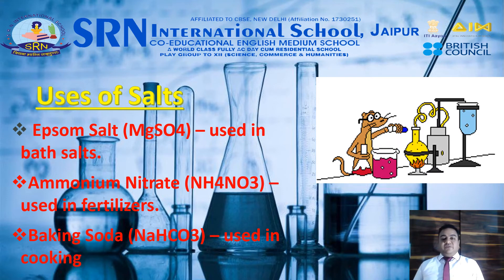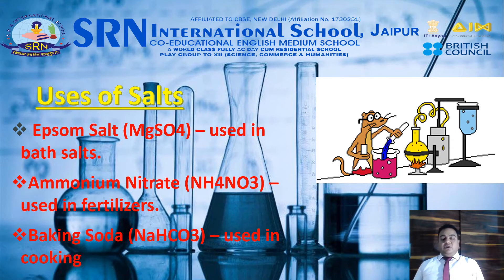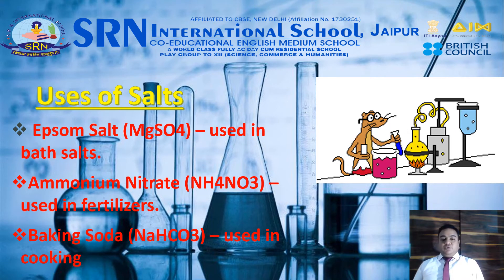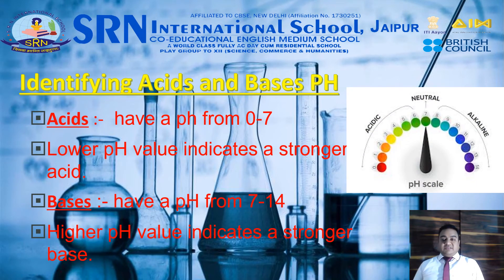Let us discuss the use of a very important salt — Epsom salt. Epsom salt is also called magnesium sulfate and is used in baking salts. Ammonium nitrate, which is NH4NO3, is used in fertilizers. Baking soda, which is sodium bicarbonate, is used for cooking purposes. It is also called midha soda and is widely used in the household.